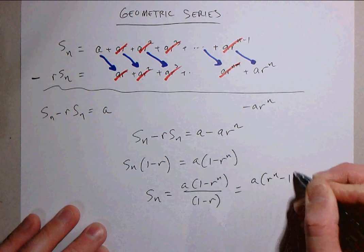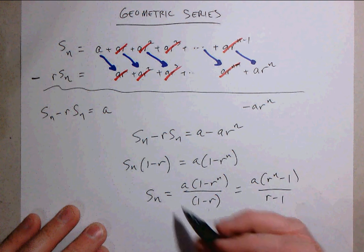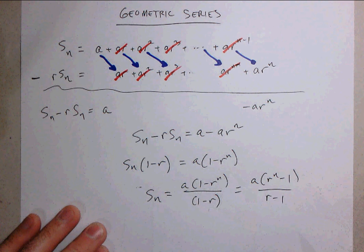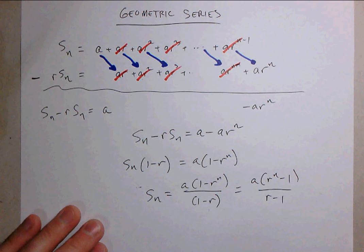Sometimes people like to write this this way by turning these both around, multiplying by negative 1 top and bottom. But I'll probably write it more like this. So this is quite a lovely formula for the sum of a geometric series.